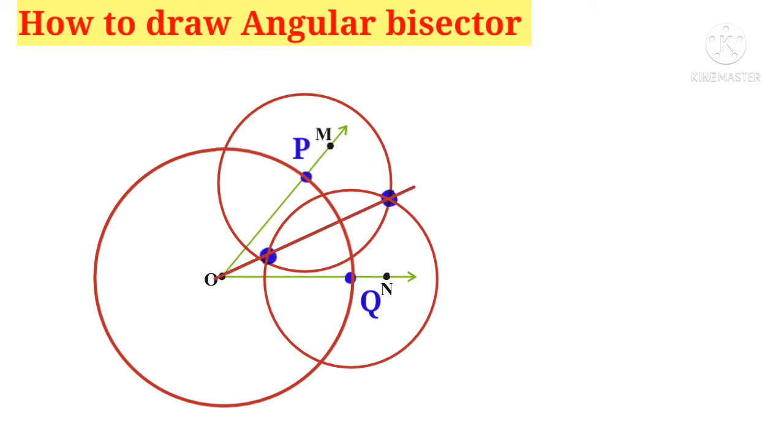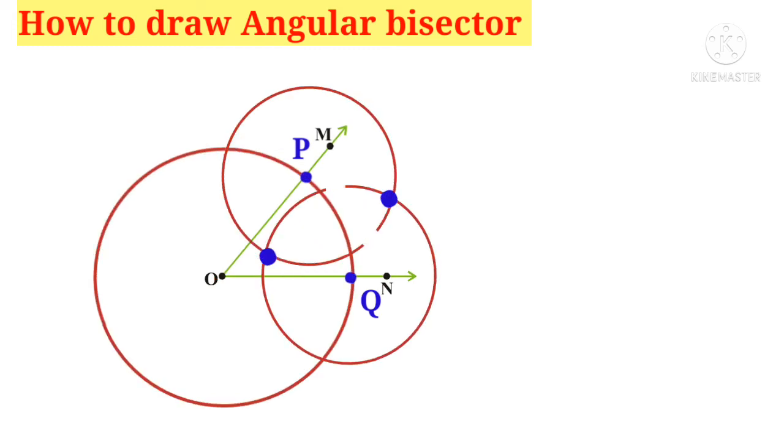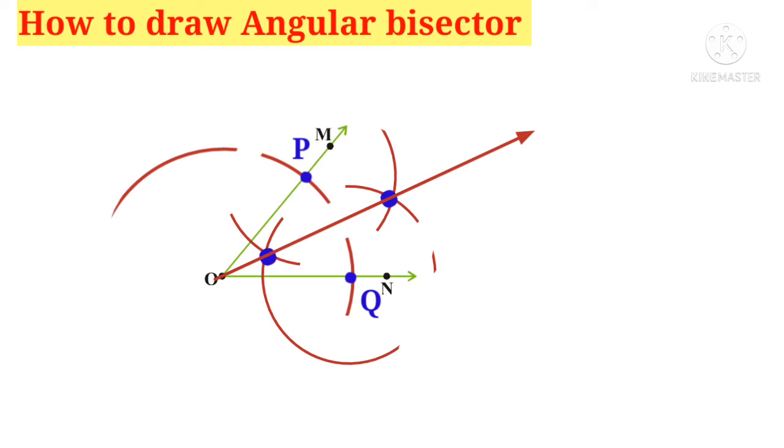Now draw a line joining the vertex with these intersection points. Then this red line is called the angular bisector. Also observe that there is no need to draw the circles to draw an angular bisector. Only arcs are enough.